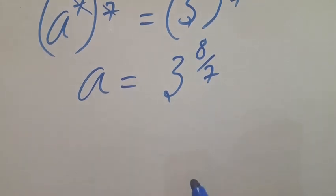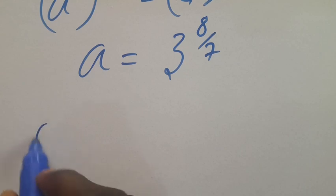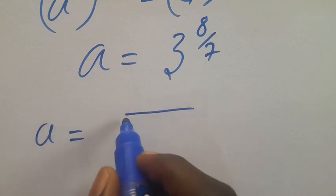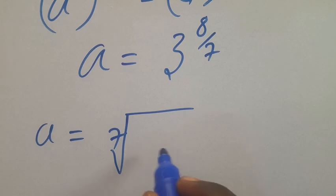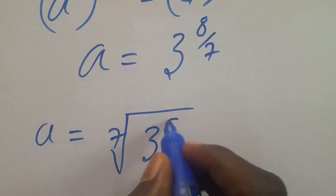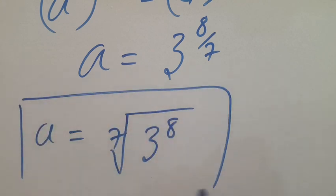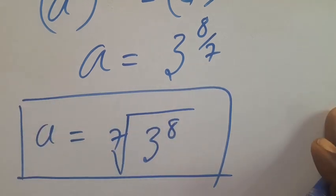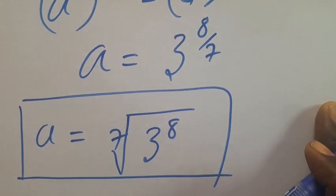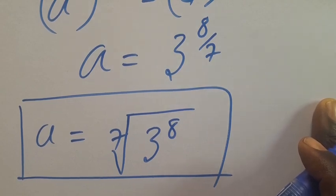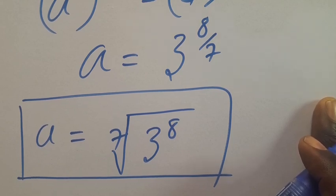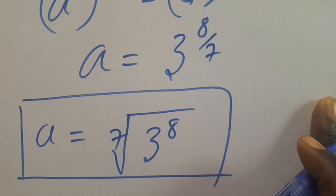The sevens cancel, so a equals 3 to the power of 8/7, which we can write as the 7th root of 3 to the power of 8. This is the final answer for the value of a. We applied two different methods — comment below which method is faster and more appropriate. If you're new here and find this video interesting, don't forget to share, like, comment and subscribe for more math tutorial videos.